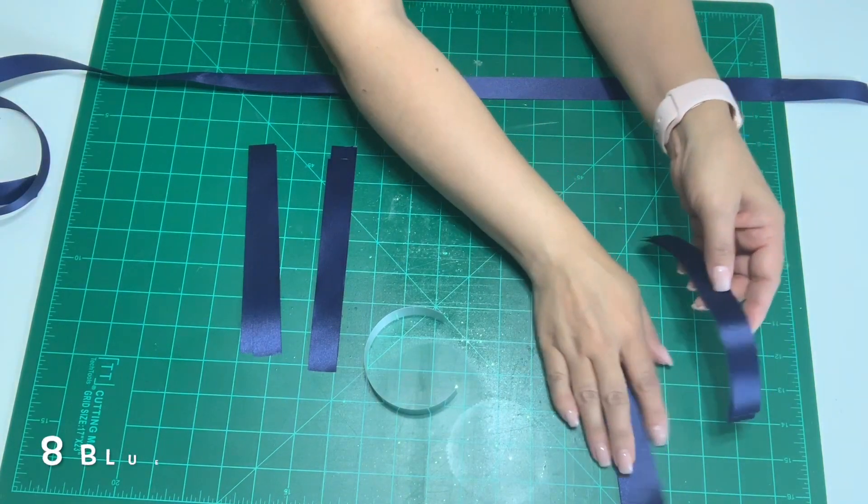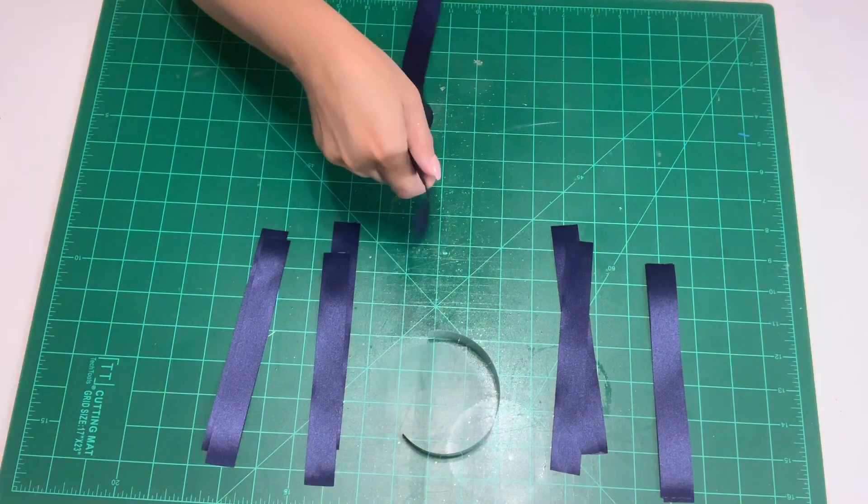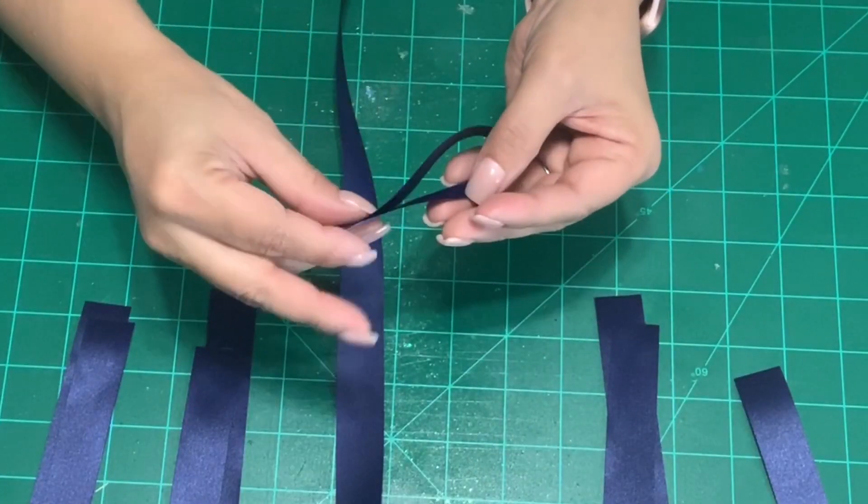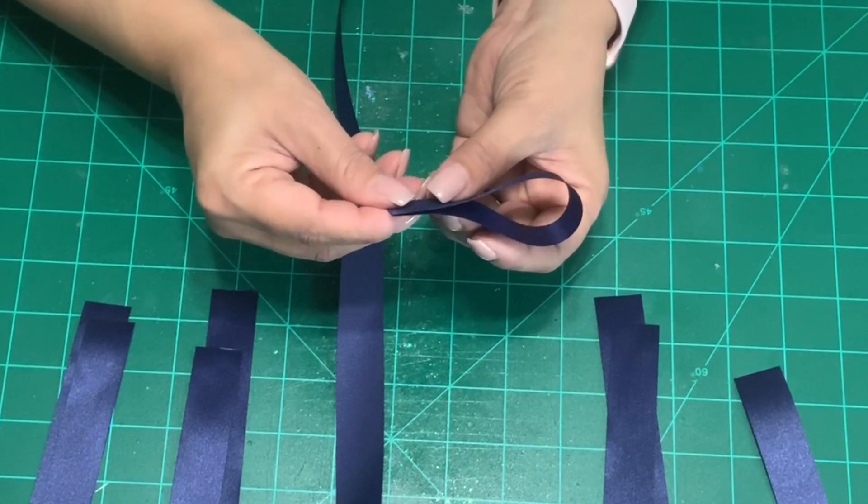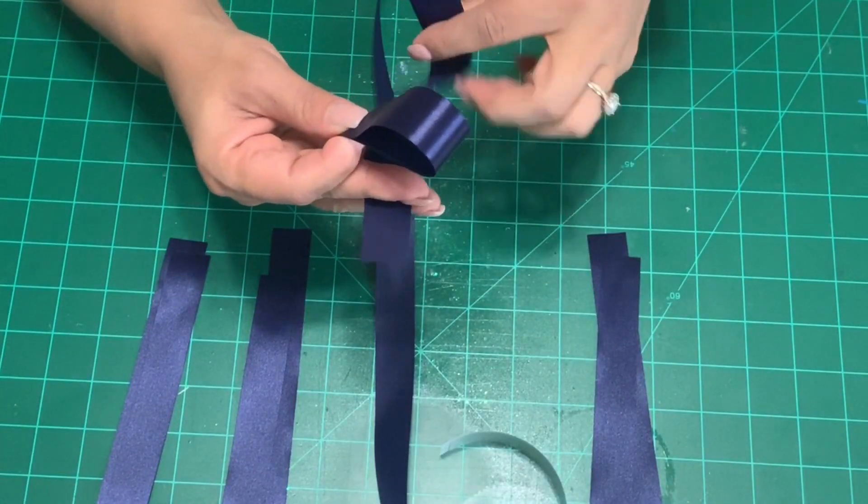The long ribbon will go in the center and will hold our hearts together. We'll start with one blue strip and you want to fold this in half. Then you'll take a second strip and fold it in half as well. I'll show you two different ways and you can pick whatever is easiest for you.